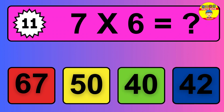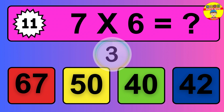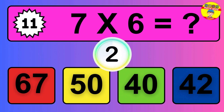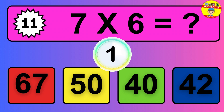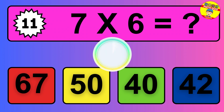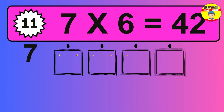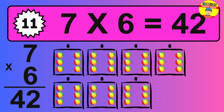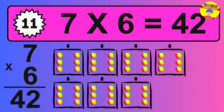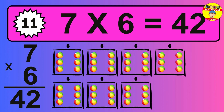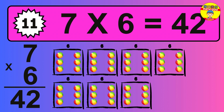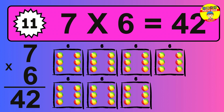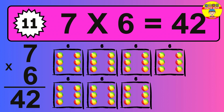Question 11. 7 times 6 equals what? So the answer is 7 times 6 is 42. To calculate, we have 7 groups with 6 balls each one. So how many balls do we have? 42 balls.